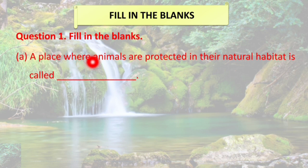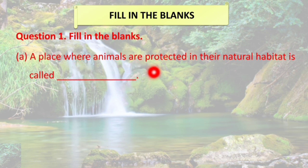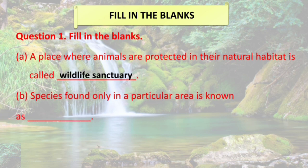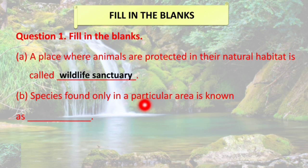First one: a place where animals are protected in their natural habitat is called a wildlife sanctuary. Next one: species found only in a particular area is known as endemic species.